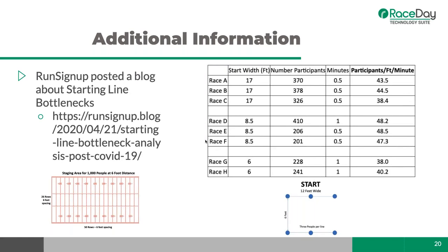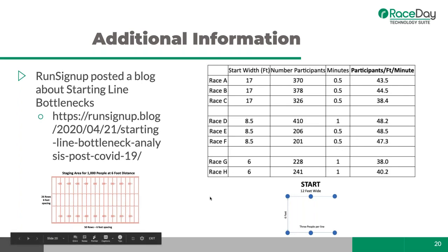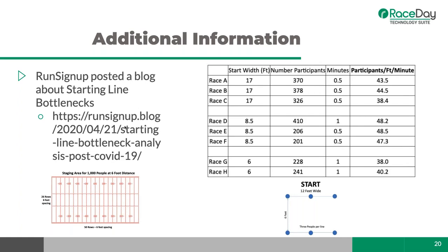Very recently — around the 21st — RunSignup posted a blog about starting-line bottlenecks with really good data on start line widths and bandwidth, provided by a timer. It discusses how to line people up when events can be held again, including spacing details. This talk will be published, but you can find the blog by searching 'bottleneck' a couple days back.